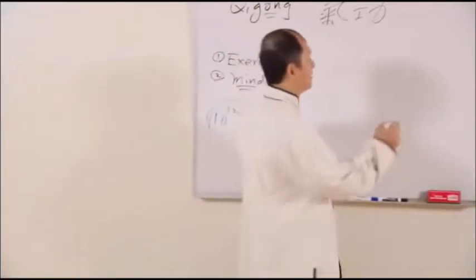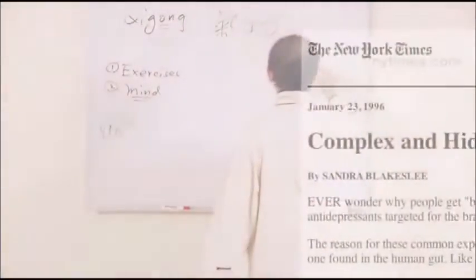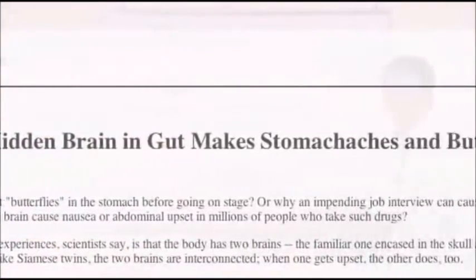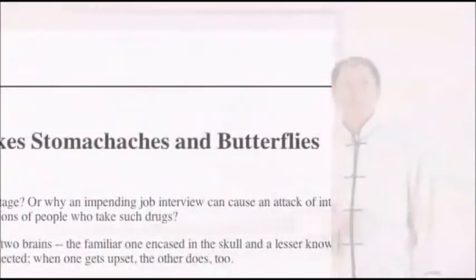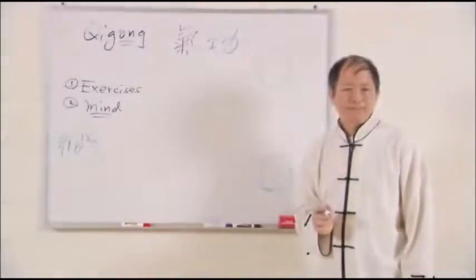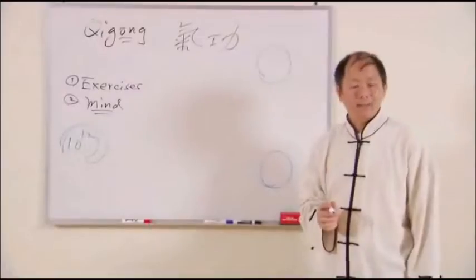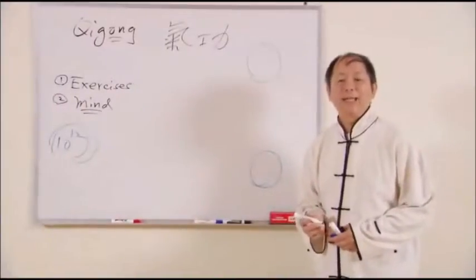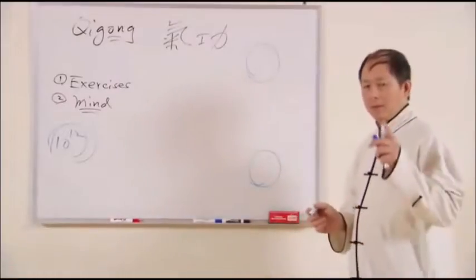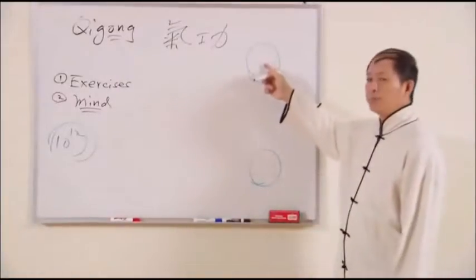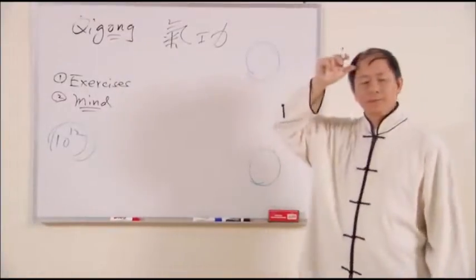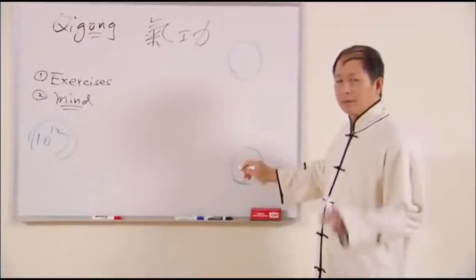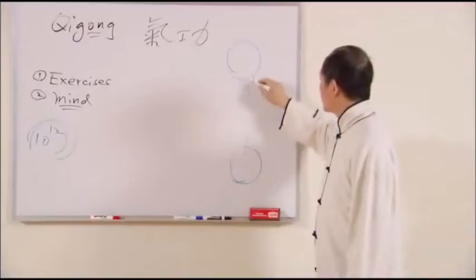Now, scientists discovered we have two brains. It's very important for anyone to understand this concept in order for you to understand embryonic breathing. We'll talk about internal elixir. Later we're going to explain what's internal elixir and external elixir. This brain they call upper brain. This one they call second brain. These two brains are connected by the spinal cord.